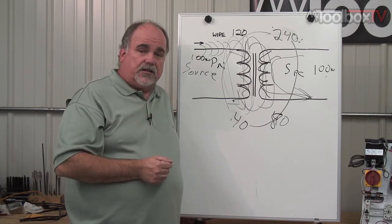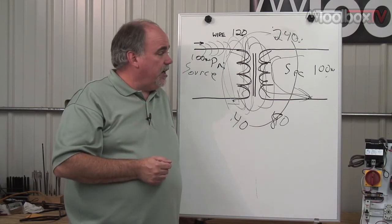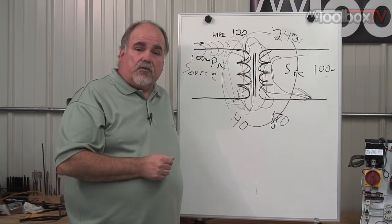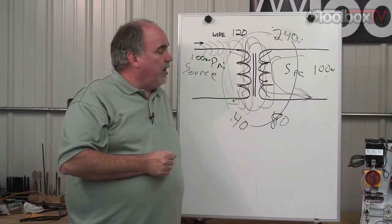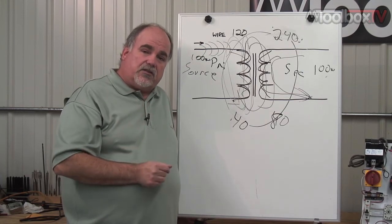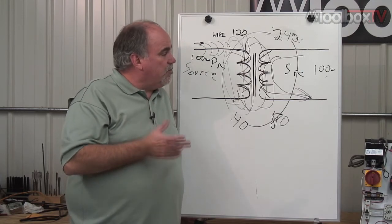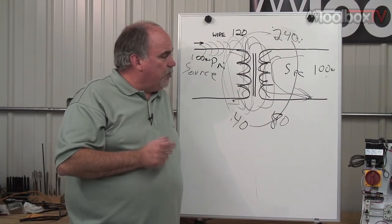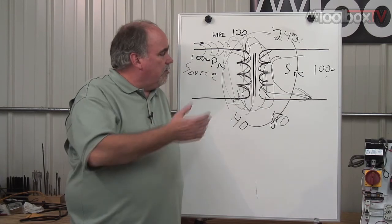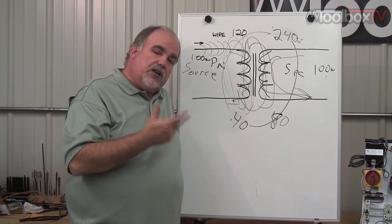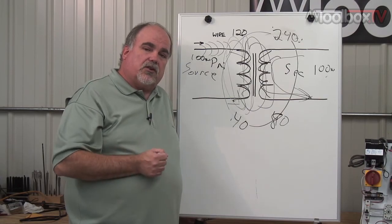And that utility transformer is going to step down that 13,800 volts down to about 240 volts on the primary side. And that's what gets fed into your house. So transformers are used everywhere for that unique potential that they can not change power. But if you change the voltage, you can also affect the current.